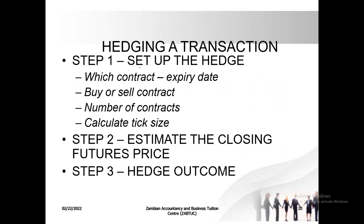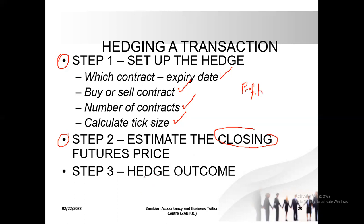If you're going to do a futures question in the traditional way, we go through three steps. In step one, we set up the hedge — what is the expiry date, do we buy or sell, the number of contracts, and the tick size. Then in step two, most importantly, we want to know the closing rate for futures so we can compare it with the opening rate and calculate the profit. In step three, we calculate the hedge outcome — looking at results on the futures and results on the currencies and combining them together.